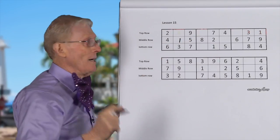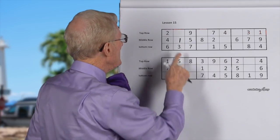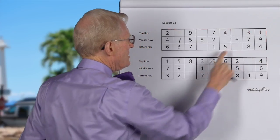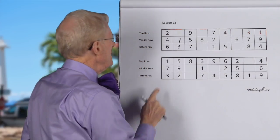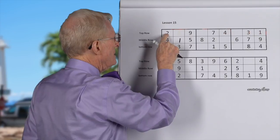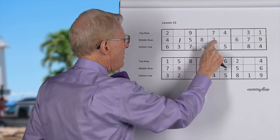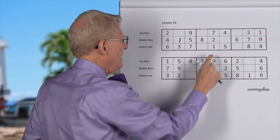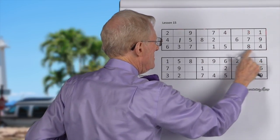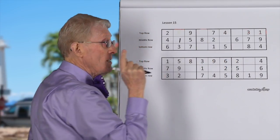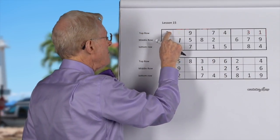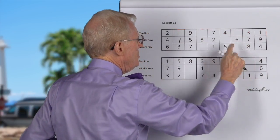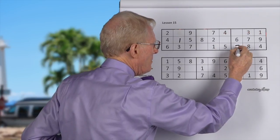Let's take two now. Where are the twos? This block has a two, this block has a two, but this block doesn't have a two. This block has a two on the top row, this block has a two in the middle row, and this block doesn't have a two. But according to the rule, if you've got one top and one middle, the block that doesn't have the two has to have it on the bottom row. So it goes there.